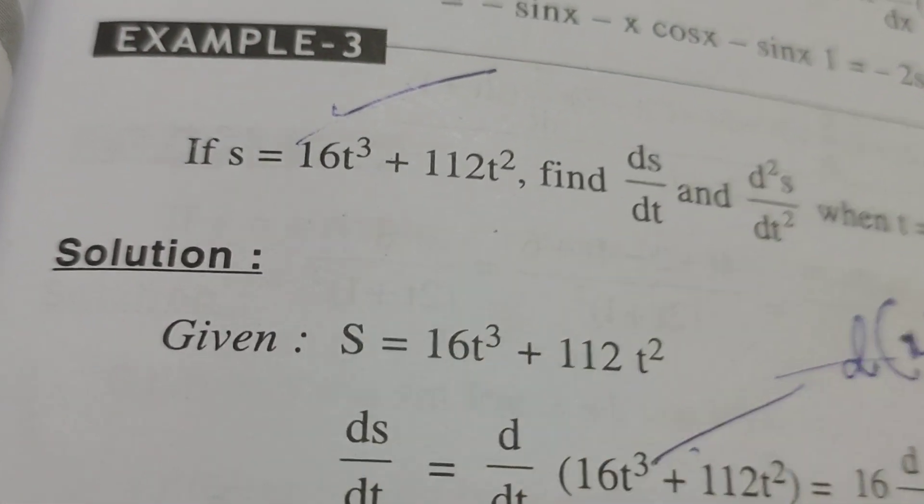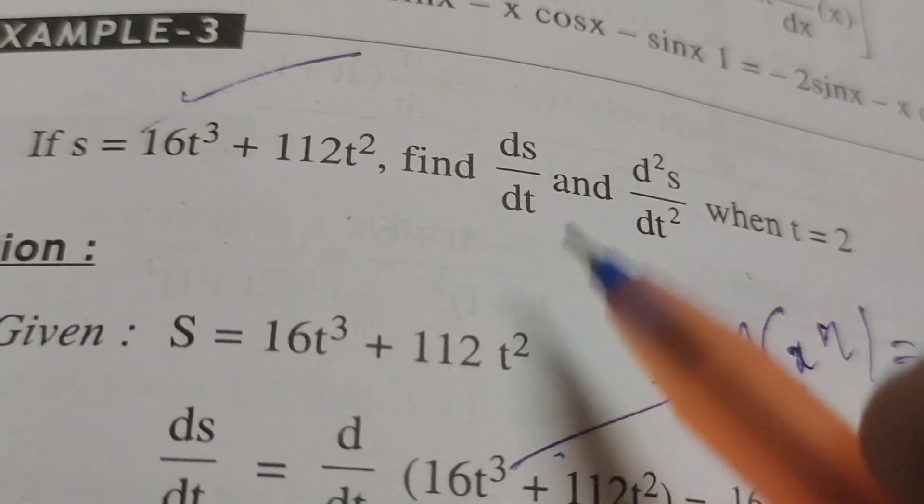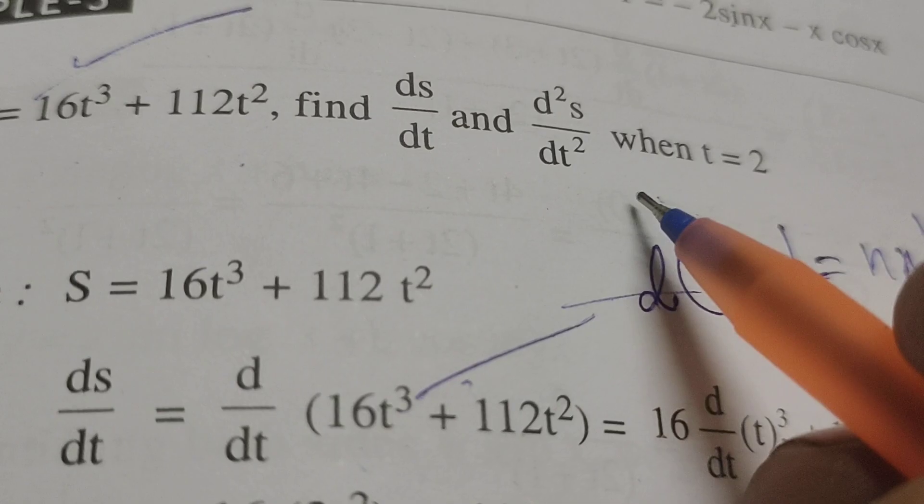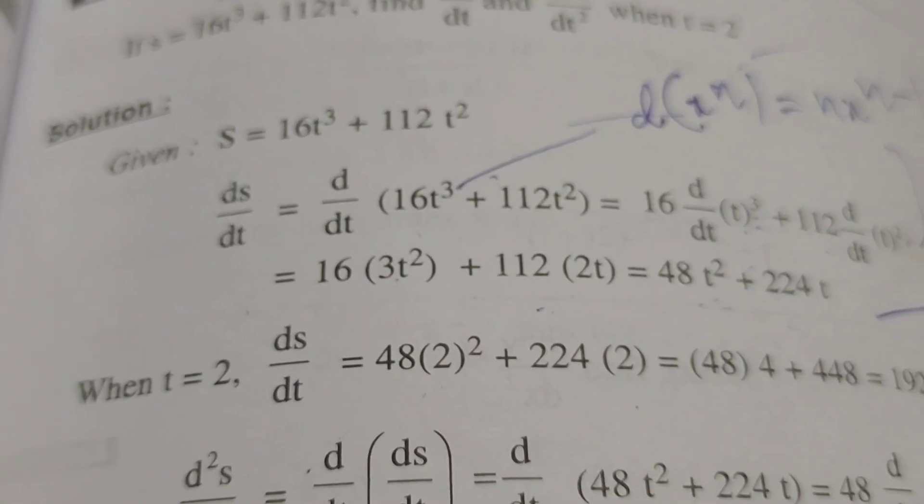This completes the differentiation problem, finding ds/dt and d²s/dt² when t equals 2. Thank you.